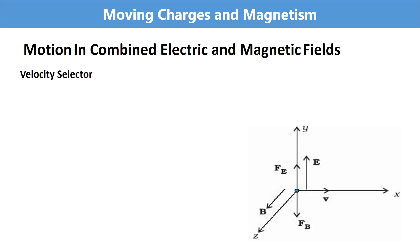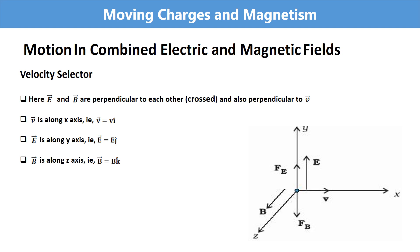In the figure, you can see the theoretical arrangement for the velocity selector. The electric field and magnetic field are perpendicular to each other and also perpendicular to the velocity of the particle. The particle is moving along the x direction.